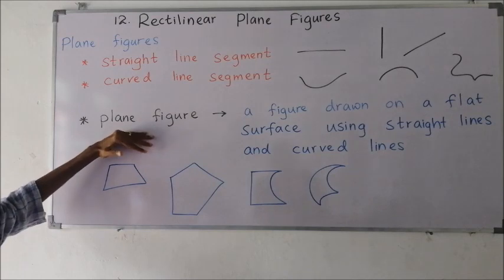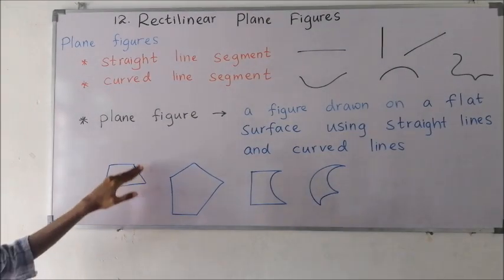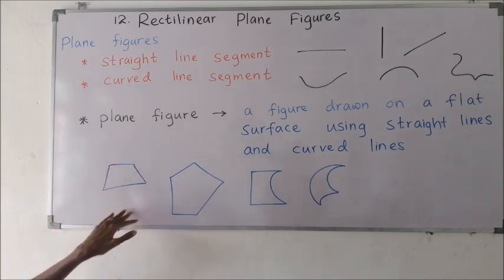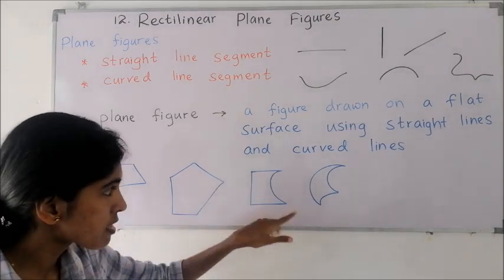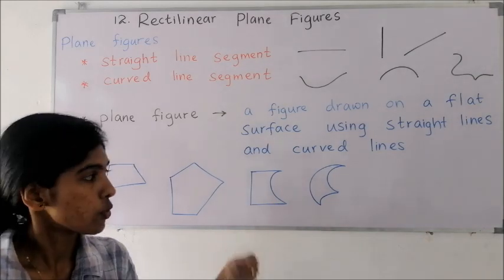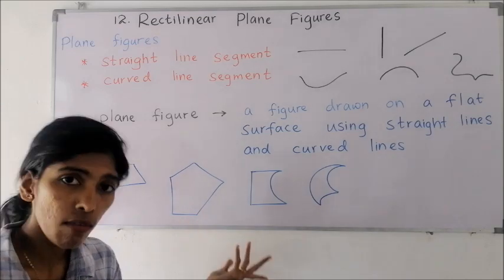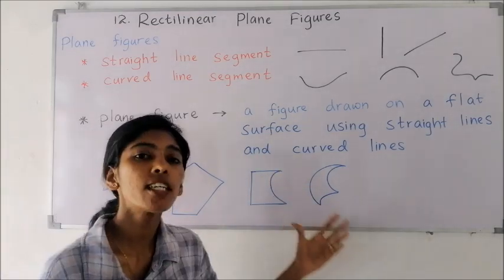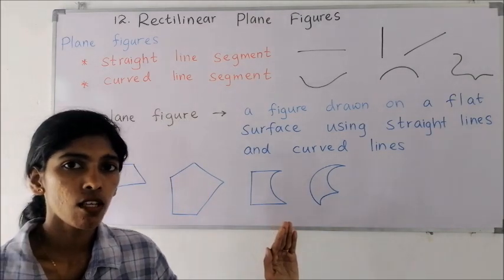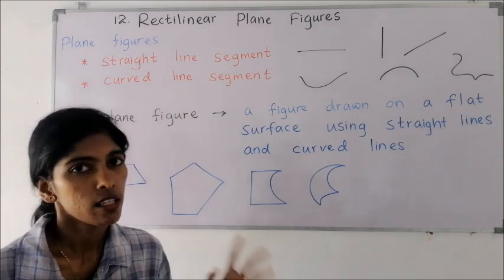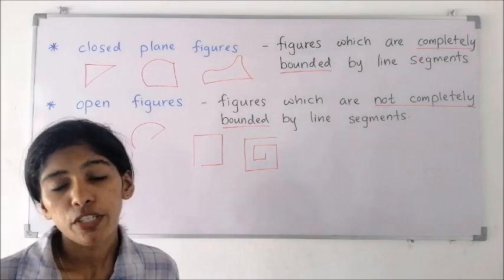Here I have given a few examples for plane figures — not rectilinear, just plane figures. This figure has only straight line segments. This one also has only straight line segments. This one has straight line segments and also one curved line — that is fine, it is still a plane figure. This one has only curved line segments. So remember, in plane figures there can be only straight line segments, only curved lines, or both curved and straight lines.